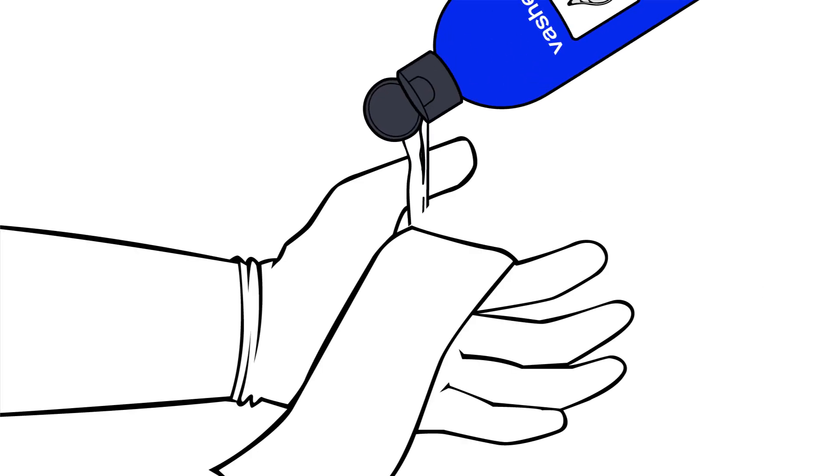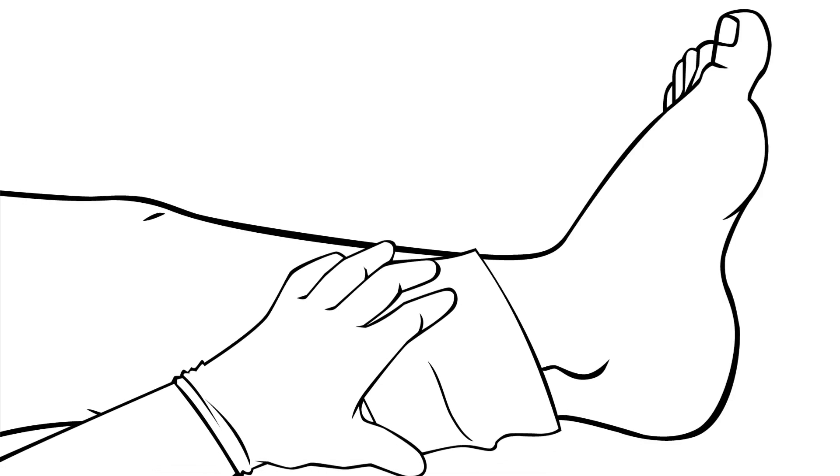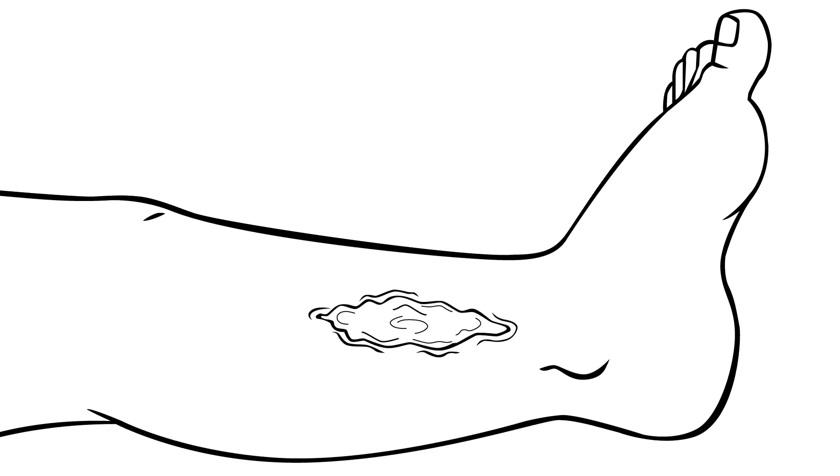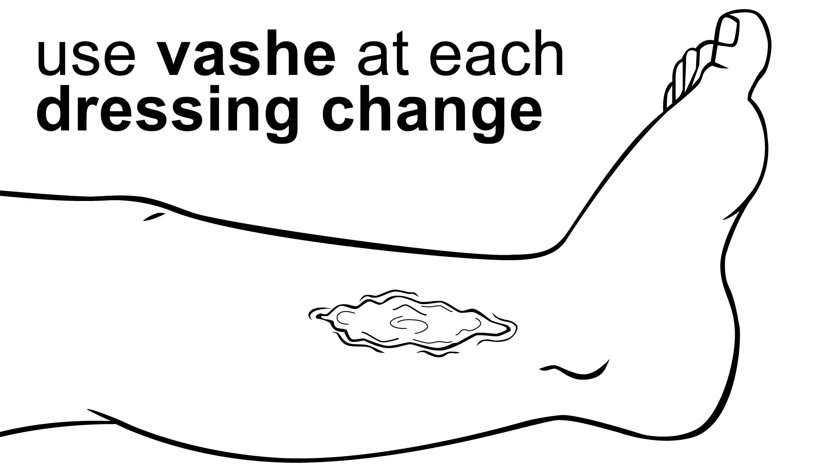Remove saturated gauze and wipe wound bed with fresh Vosh soaked gauze. Pat the peri wound area dry. Vosh may help loosen any non-viable tissue or debris through the process of soaking. Use Vosh at each dressing change.